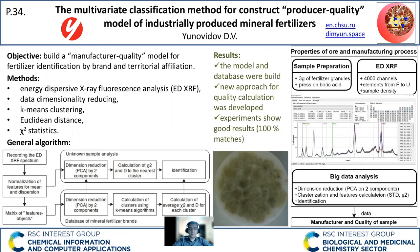Based on the combination of these parameters, a conclusion is made about the manufacturer and quality of the fertilizers as a numerical feature. We used a set of five different fertilizer brands and four encrypted samples for experimental validation of the model. The brands of all encrypted samples were defined correctly and the numerical quality criteria were calculated. The analysis time of one sample did not exceed five minutes. Thank you for the attention.